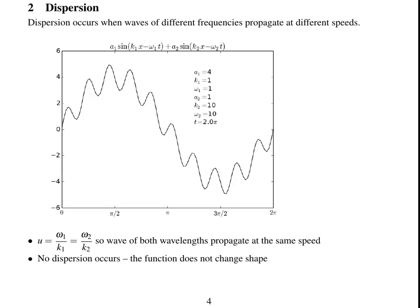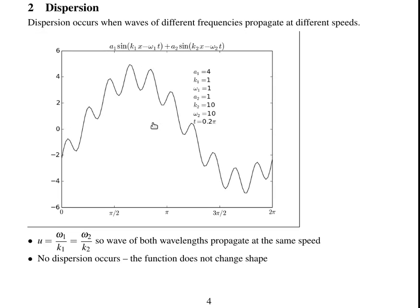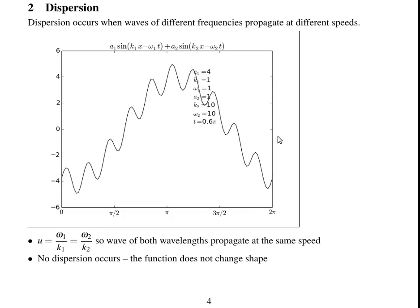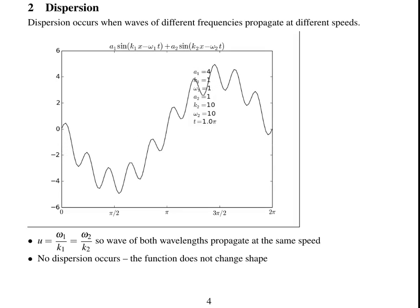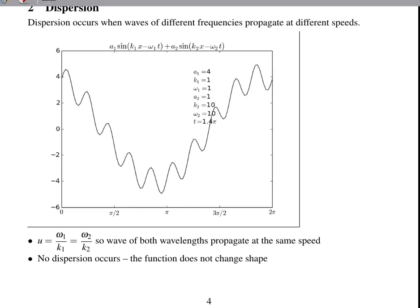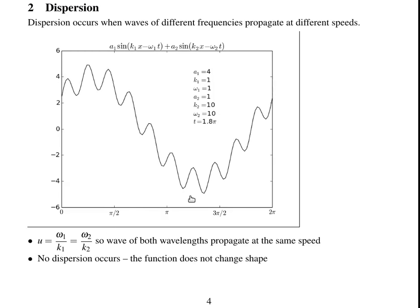So dispersion. Dispersion occurs when waves of different frequencies propagate at different speeds. This is a non-dispersive wave. You've got one function which consists of two different wave numbers, wave modes of two different wave numbers, and they've both got the wave speed, u equals omega over k.